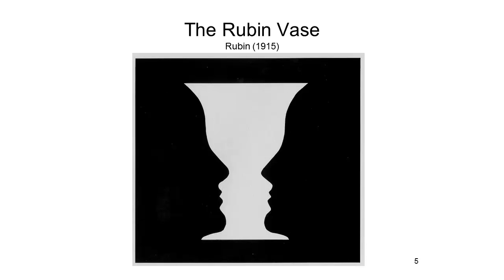Consider the following figure, known as Rubin's Vase, in which the observer sees a white goblet or vase against a black background. But keep looking at it for a while, and you'll also see a pair of profiles in silhouette against a white background. Both the vase and the profile are perfectly compatible with the stimulus input. There's nothing in the stimulus that would help us decide whether this is a white vase against a black background or two profiles in silhouette against a white background.